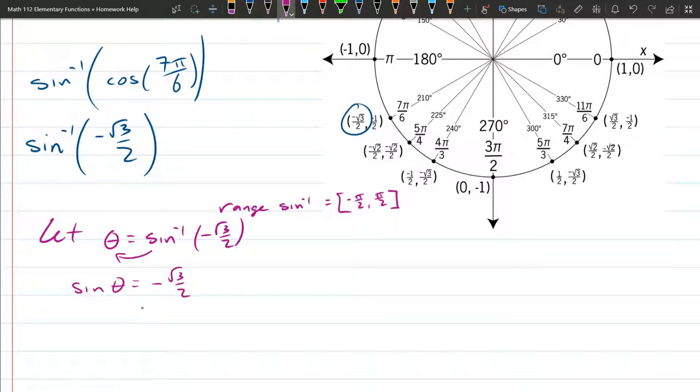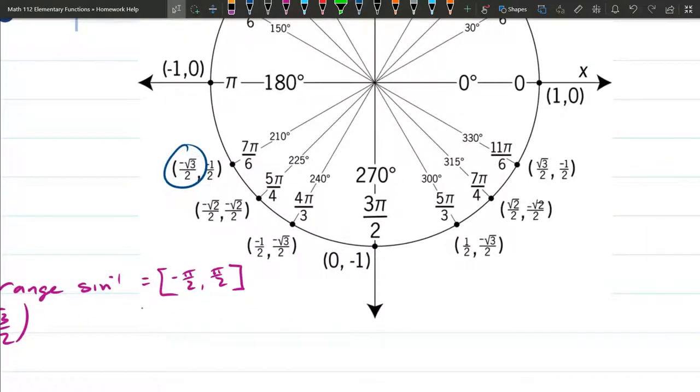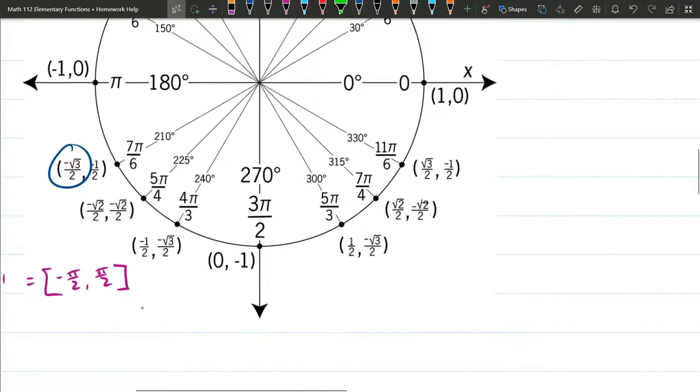I'm going to look back at the unit circle. I want to know what angle has a sine value of negative square root 3 over 2. Remember, sine is a y value, so I'm looking in the y coordinates here. There should be two coordinates on the unit circle, two y coordinates, that are negative square root 3. These are the two angles that have the right sine value.